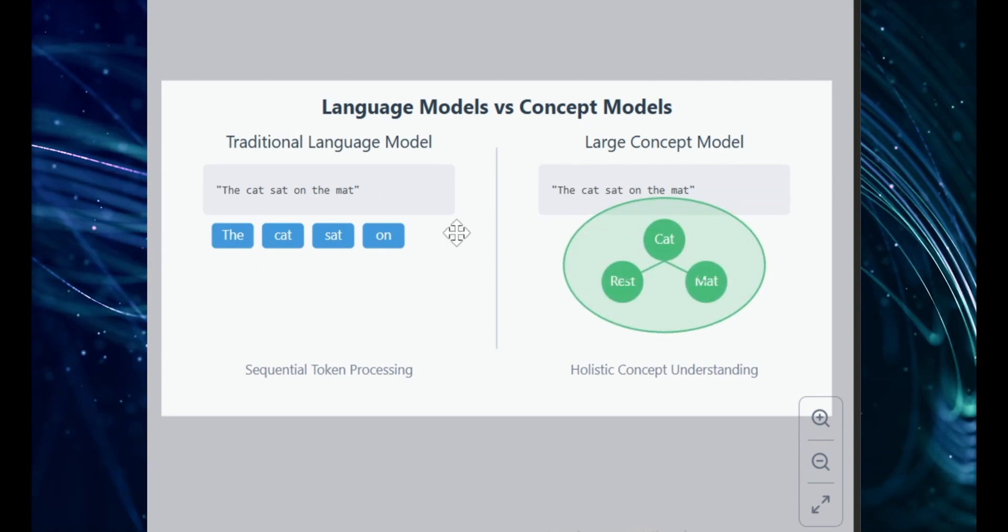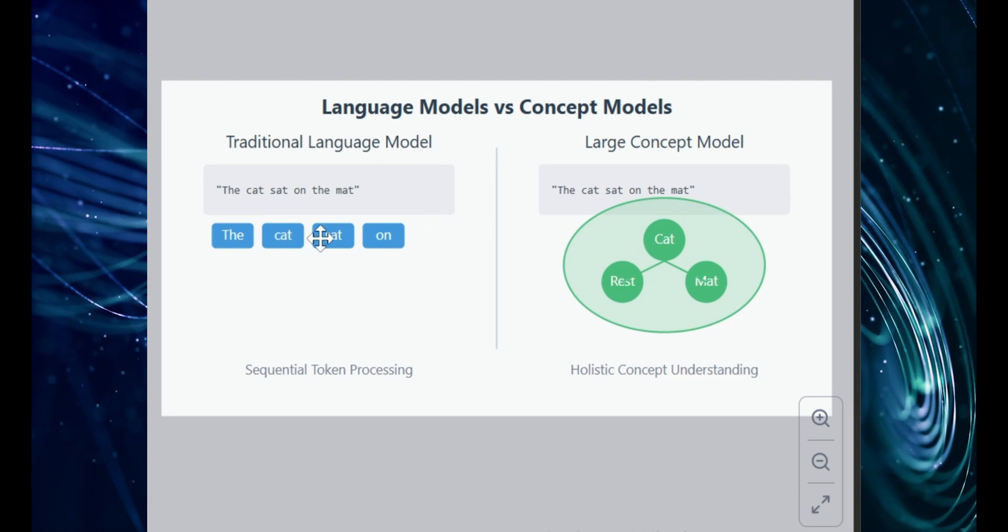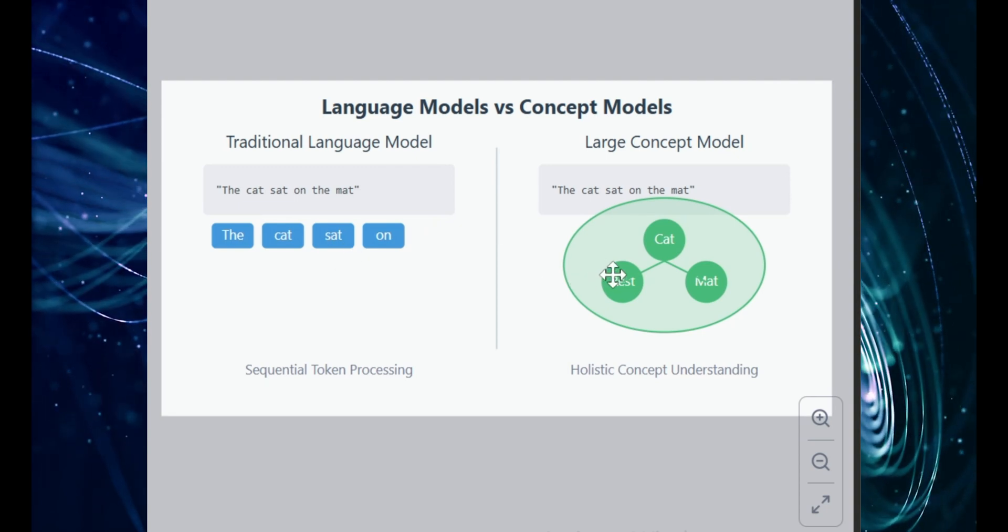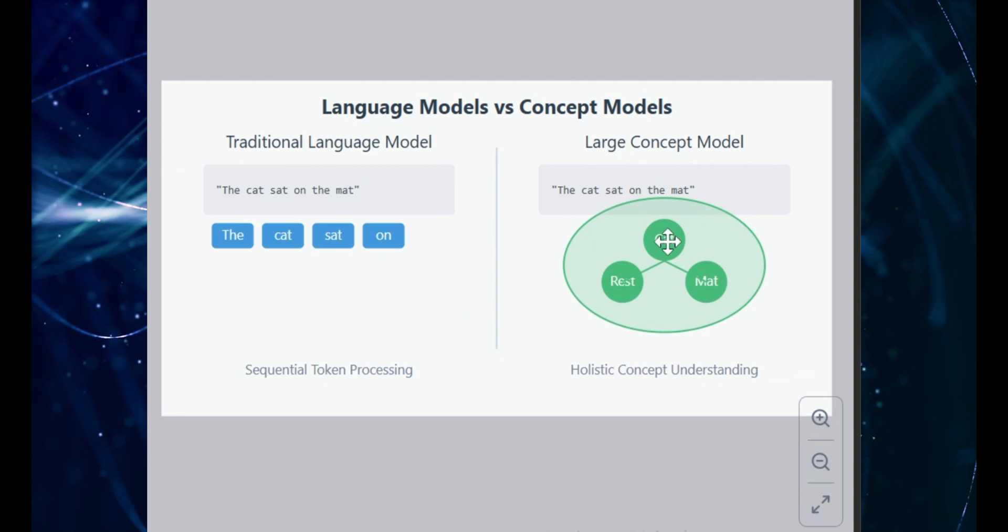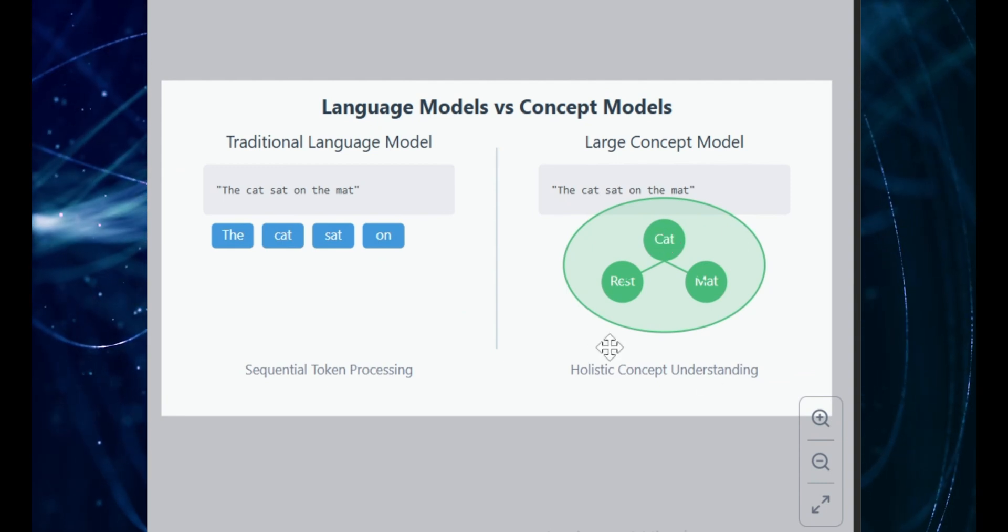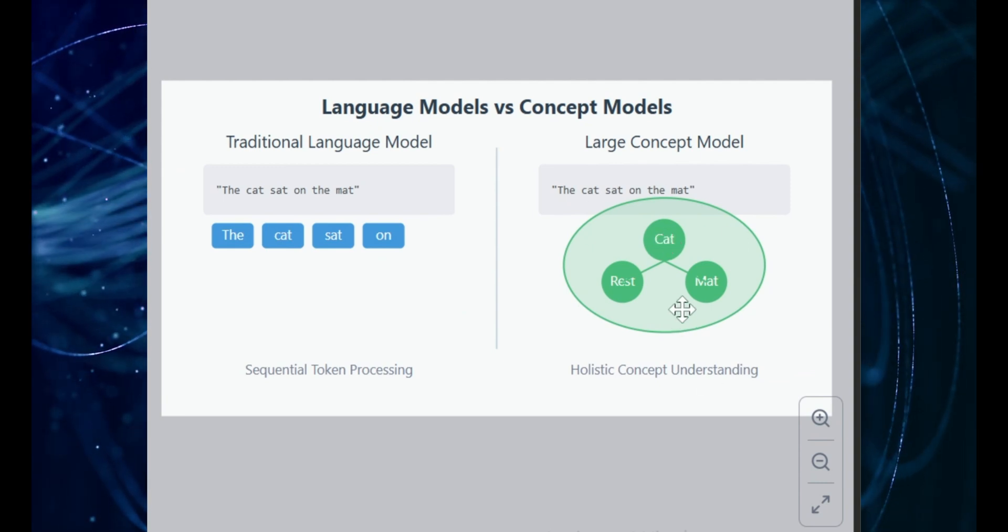I mean, they can predict the next word in a sentence, but they don't really get the bigger picture. Like the underlying concepts, they don't really understand. It's kind of like they're reading a book but just by looking at each letter one-by-one instead of understanding the sentences in the whole story.